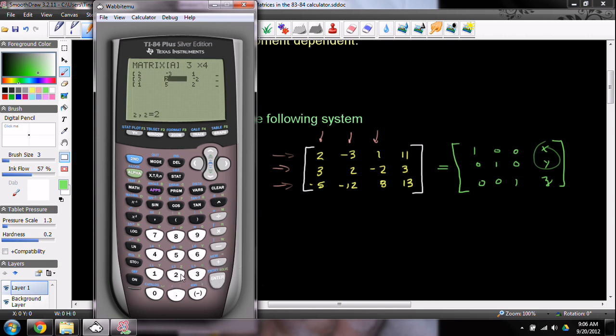3, enter, 2, enter, -2, enter, 3, enter. And for the final row, it's going to be -5. Watch this. See the one over there. Notice up here, notice I put it on the screen, but you can't see that. Notice that the one is there, but as soon as I put in -5 and hit enter, it changes it. Okay, so -12, enter, 8, enter, 13, enter.